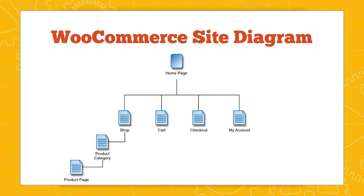This is a site diagram of a very simple WooCommerce website. You've got the homepage, and then the four special page types: shop, cart, checkout, and My Account. Coming out of the shop page, WooCommerce generates a couple of different variations depending on how your shop is set up. You can show product categories — if you've got quite a few products, you might want to group them into categories — and then individual product pages as well, which WooCommerce will automatically generate.